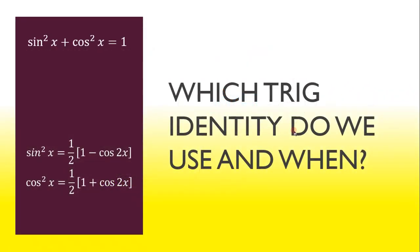So which trig identity do we use, and when? So we actually use the Pythagorean identity when we're dealing with odd powers, and then the half-angle formulas when we're dealing with even powers.